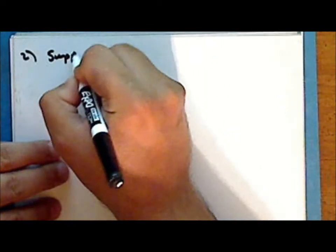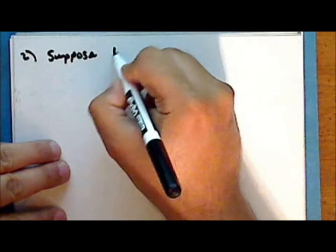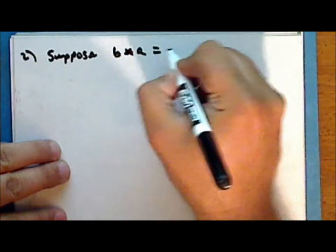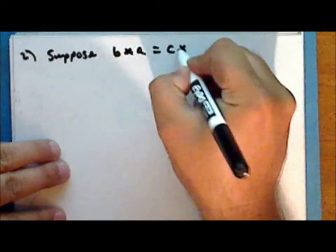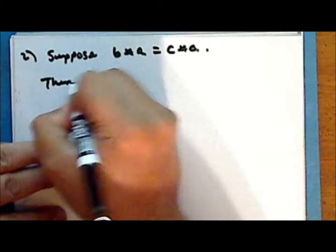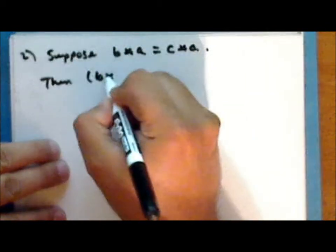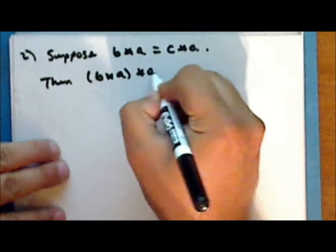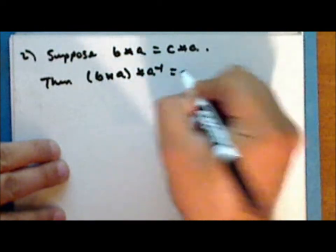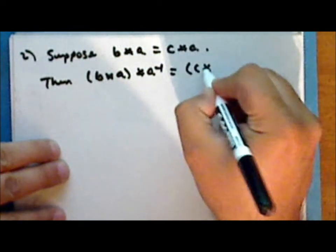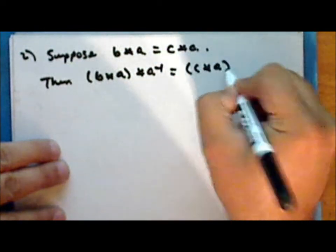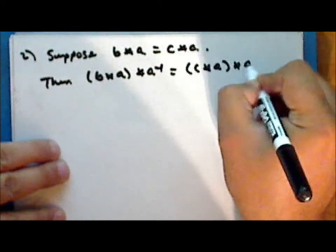Second statement: suppose that B star A is equal to C star A. Then the quantity (B star A) star A-inverse is equal to the quantity (C star A) star A-inverse.